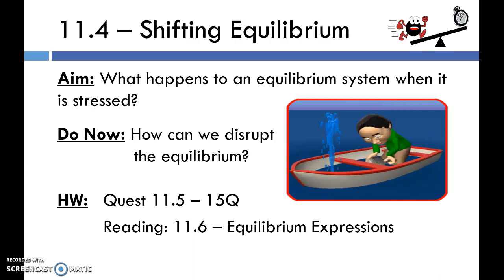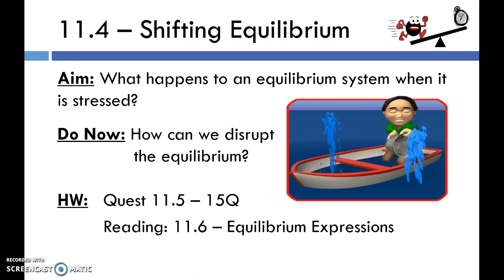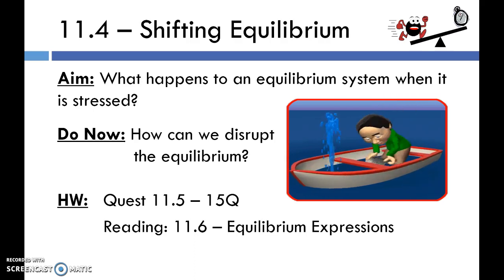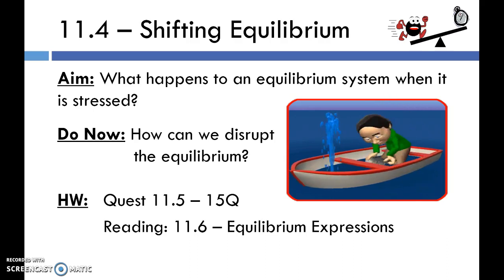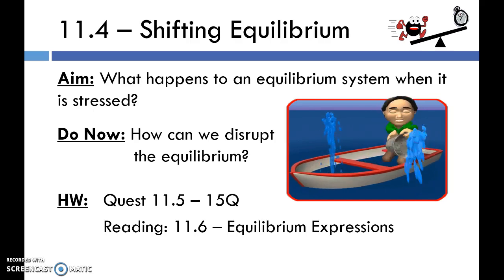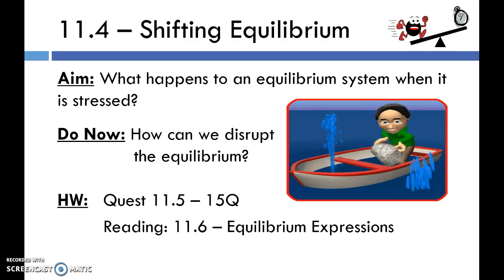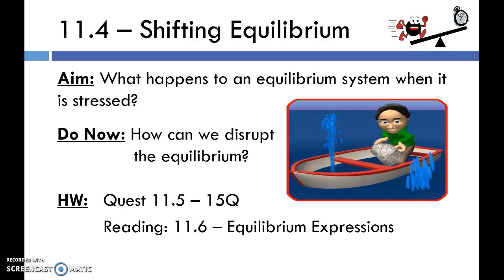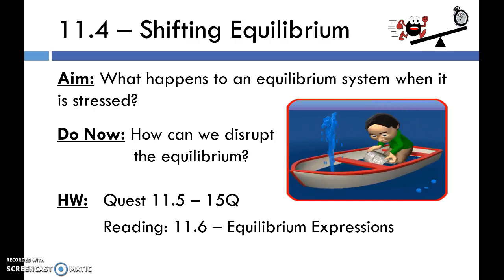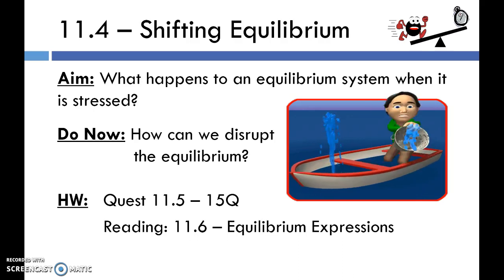In the picture on the screen right now we've got an equilibrium system: this guy bailing water out of the boat. We know the system is at equilibrium because the water level on the boat isn't changing. Take a few seconds and brainstorm at least two different ways you could disrupt the equilibrium in this boat. You might think: give the guy a bigger bucket so the amount of water being removed is greater than the amount coming in, or take the bucket away, or patch the hole or make it bigger.